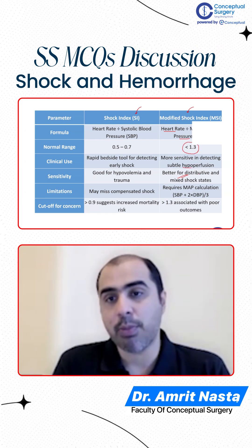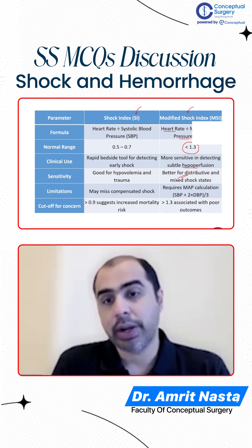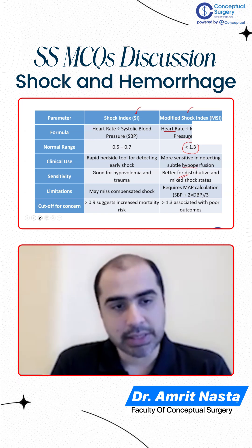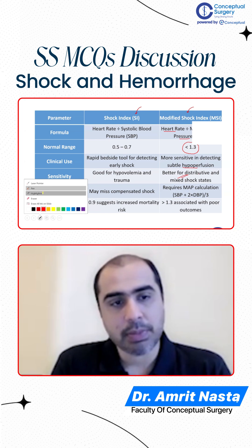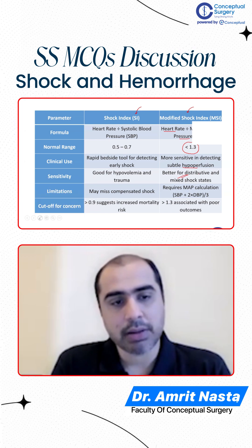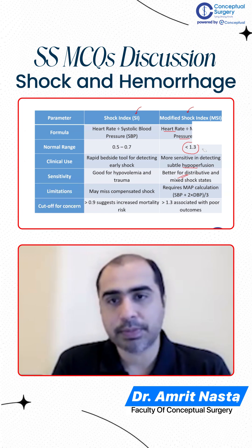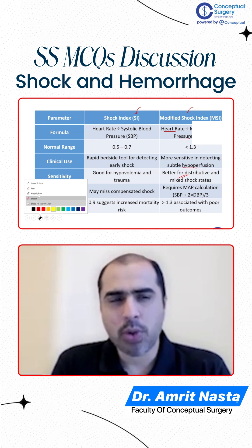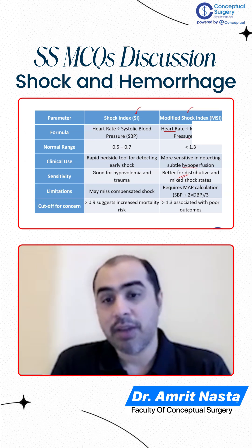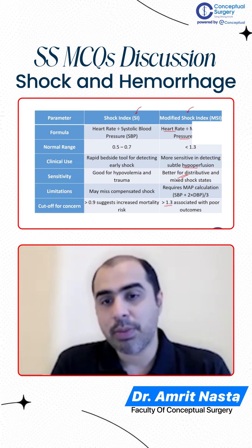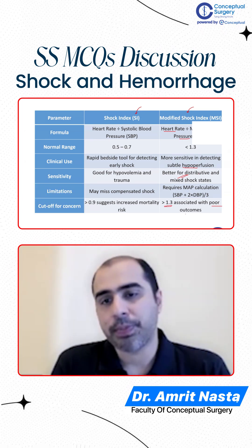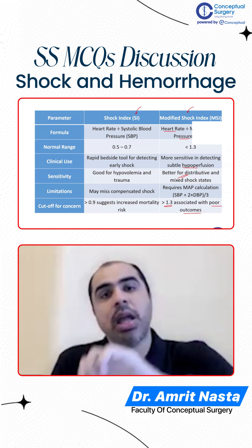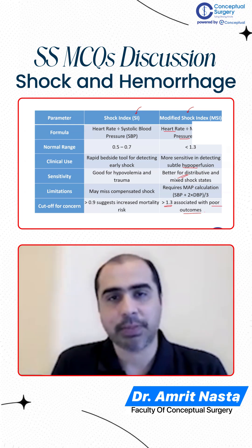It is telling me about hypoperfusion. If it increases, it means the person is having hypoperfusion. A normal should be less than 1; up to 1.3 is okay. If it is more than 1.3, it is a poor outcome — it means heart rate is too much and the MAP is too little as a fraction.